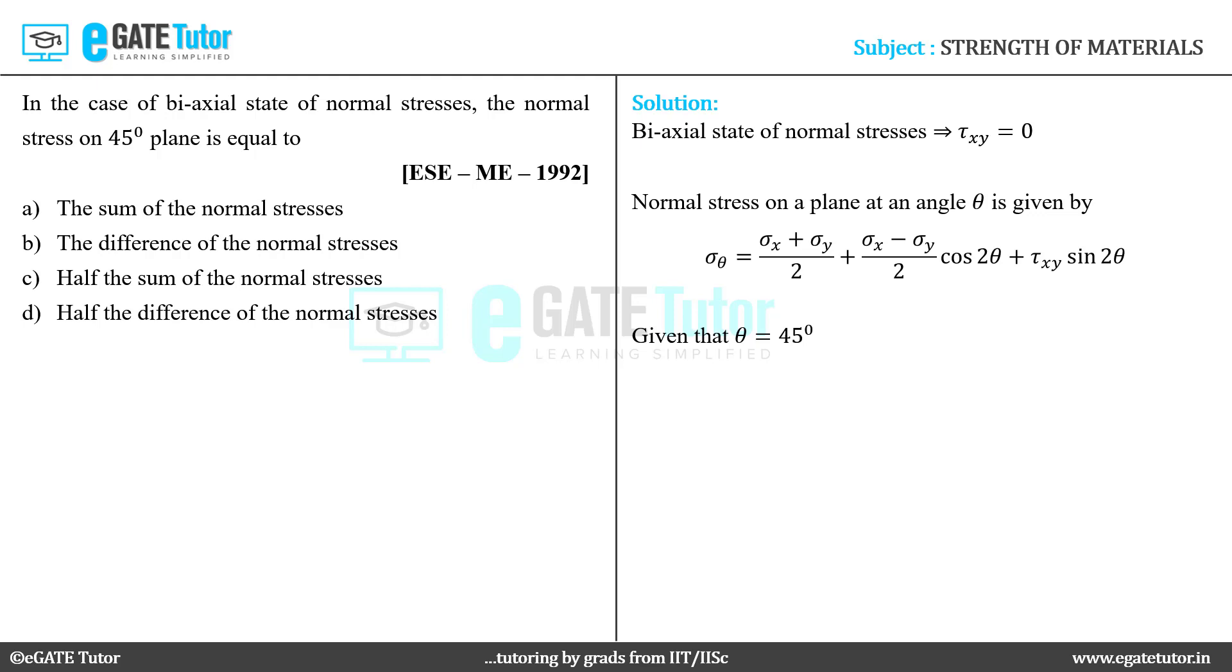theta equals 45 degrees into the above equation, we get sigma theta equals sigma x plus sigma y by 2, plus sigma x minus sigma y by 2 cos 90 degrees, plus tau xy sin 90 degrees.